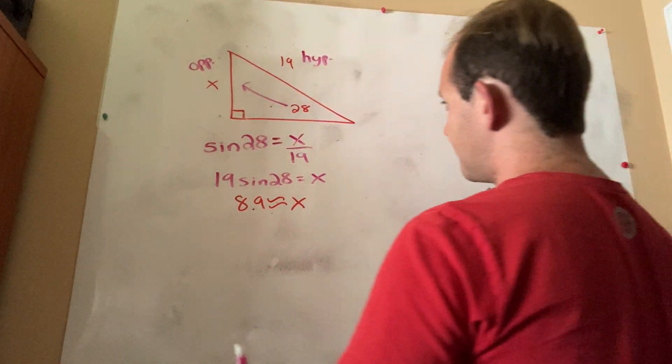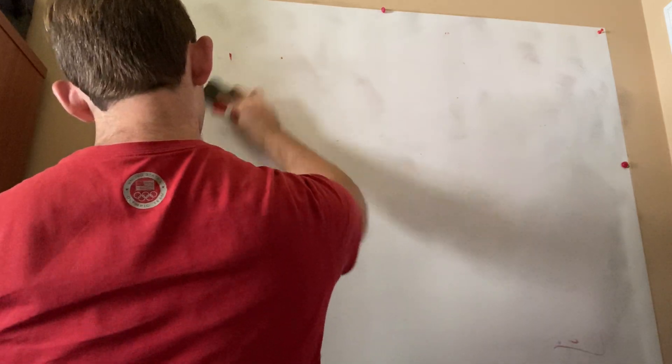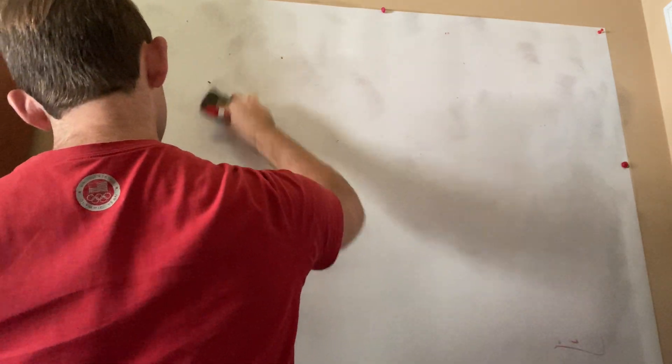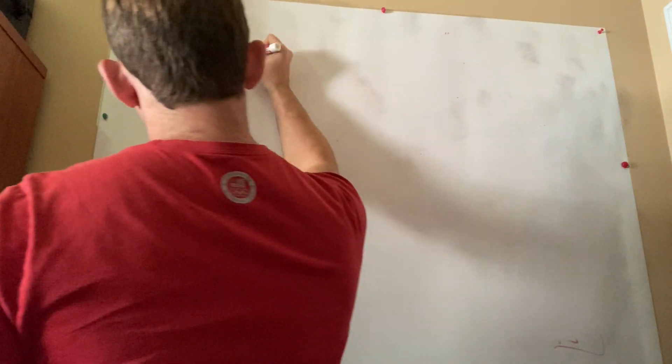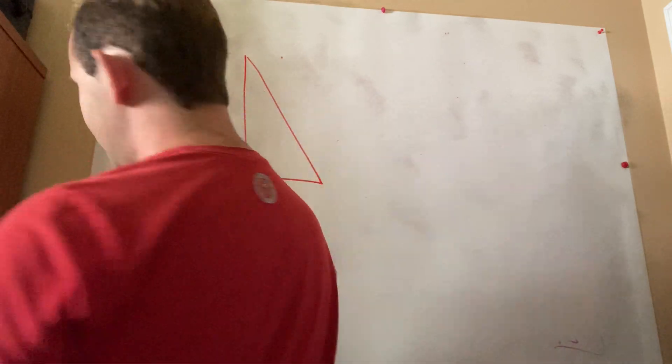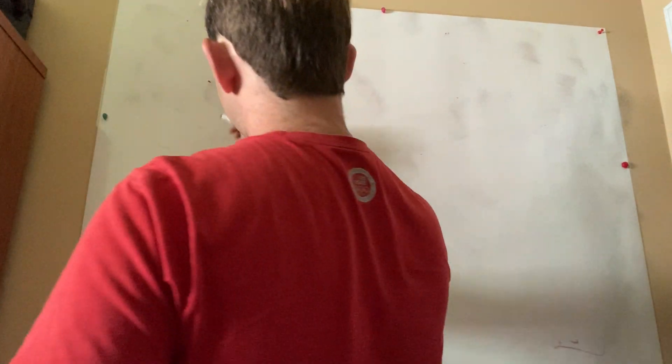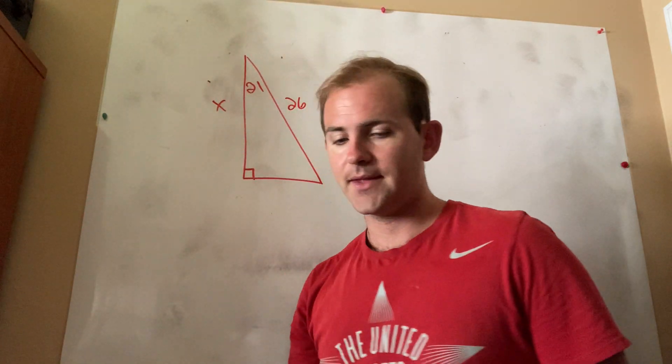Let's take a look at another example. This one will be example number 6. And let's go through the exact same steps once more so you guys understand how to approach these. So there's the right triangle. That's X, 26, and 21.